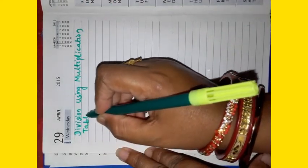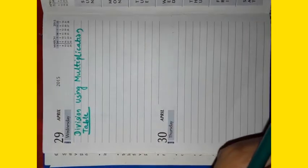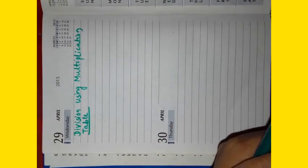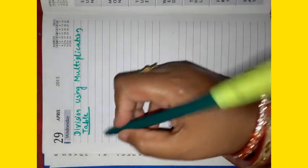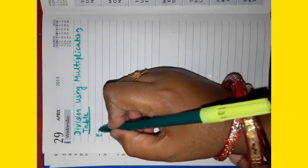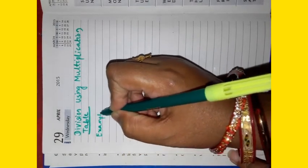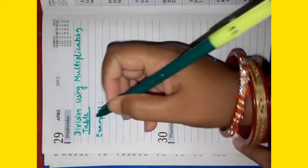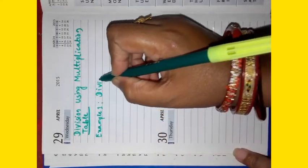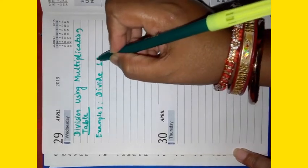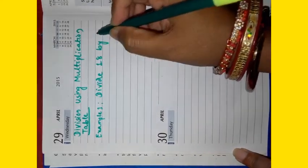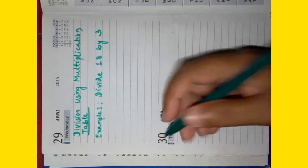Let us divide a number by another number using multiplication tables. Let us take example 1. Divide 18 by 3.